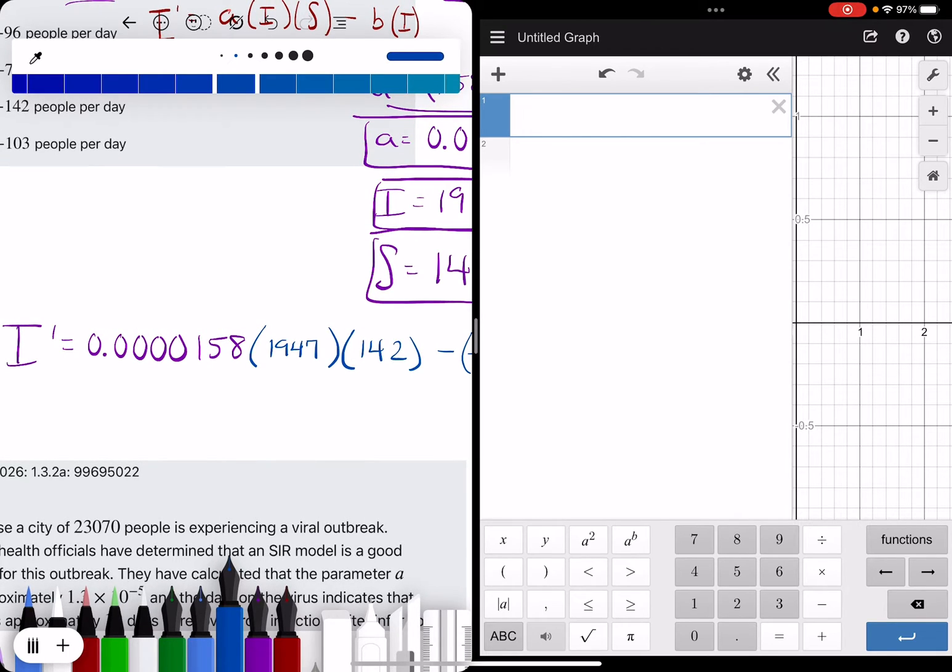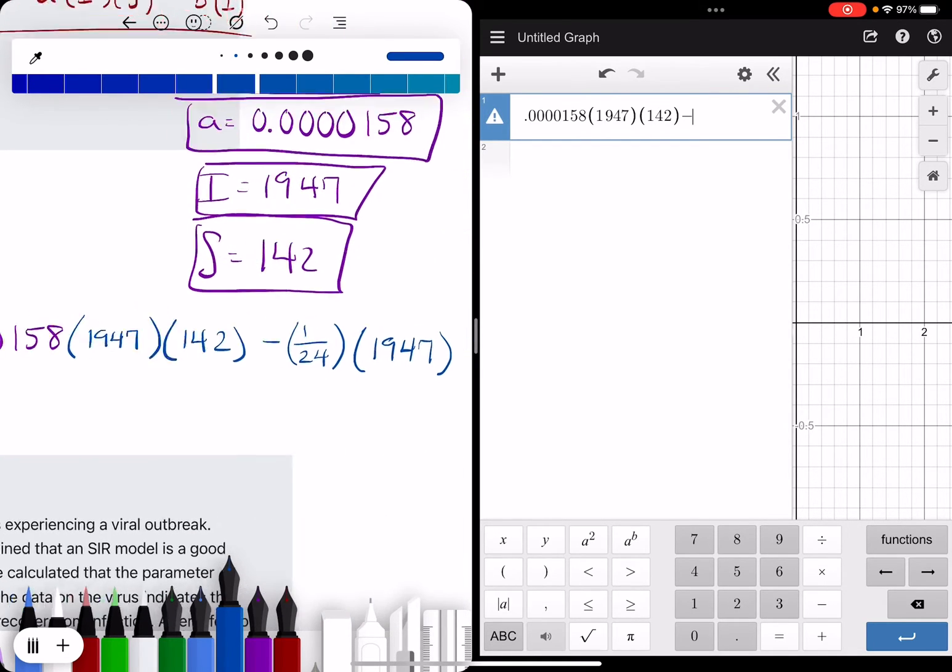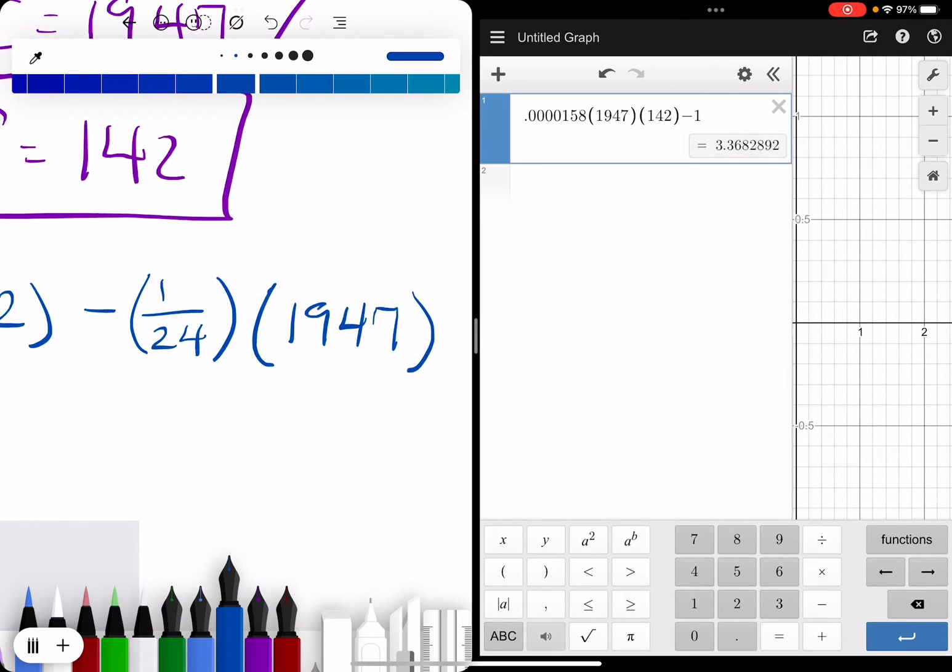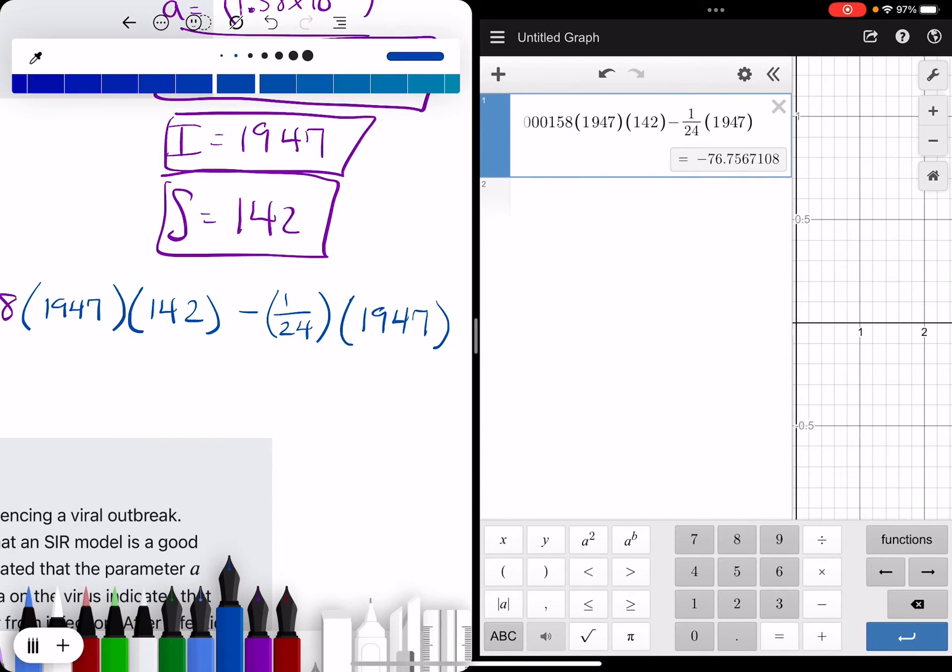And we're plugging in this formula here. So we have 0.0000158 times 1,947 times 142 minus 1 over 24, and that is being multiplied also by 1,947. So we get approximately negative 76.76. That's easy enough.